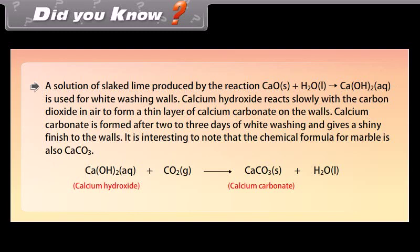A solution of slaked lime produced by the reaction is used for whitewashing walls. Calcium hydroxide reacts slowly with the carbon dioxide in air to form a thin layer of calcium carbonate on the walls. Calcium carbonate is formed after two to three days of whitewashing and gives a shiny finish to the walls. It is interesting to note that the chemical formula for marble is also CaCO3.